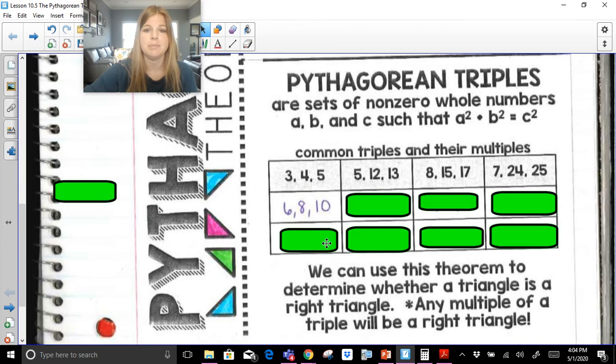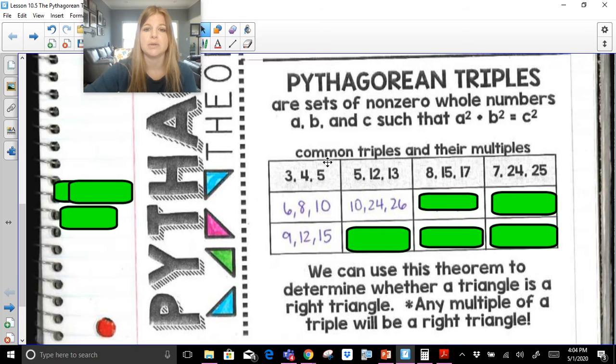equals 5 squared, which is 25. And any multiples of those, so if I double it or triple it, these will also work. 6 squared plus 8 squared equals 10 squared. 9 squared plus 12 squared equals 15 squared. So these triples, 3, 4, 5,